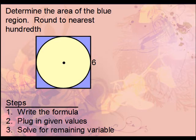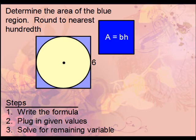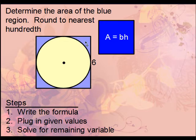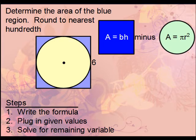Let's determine the area of this blue region, rounded to the nearest hundredth. We have a square with a circle cut out of it. We'll find the area of the entire square, then subtract the area of the circle. Area of square is base times height; area of circle is πr².